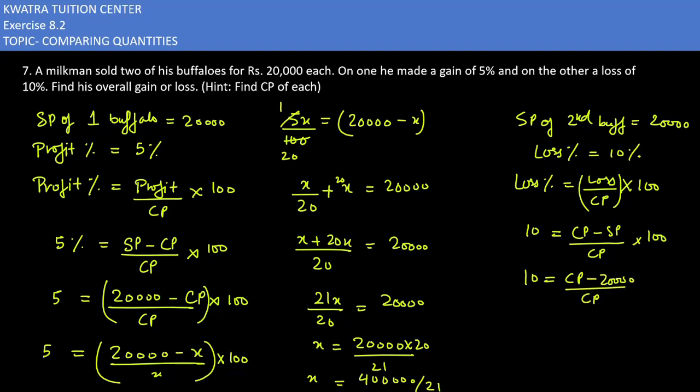Loss is CP minus SP. We will take CP as y. 10 equals y minus 20,000 over y times 100. Y will be taken to the left side and 100 will cancel. Y over 10, and 20,000 equals y minus y by 10.